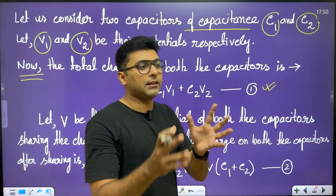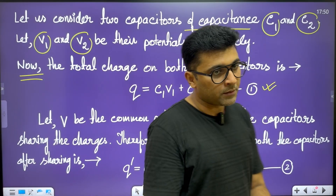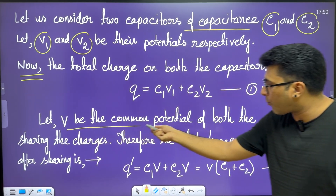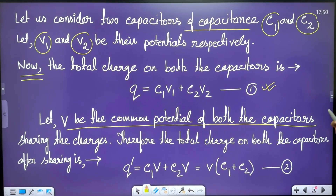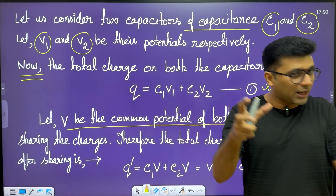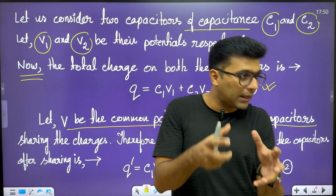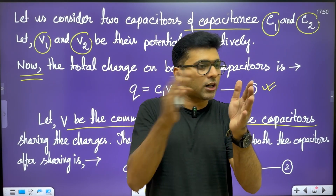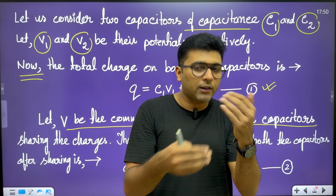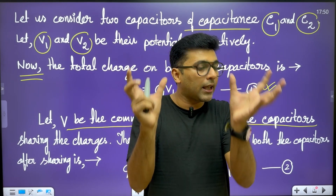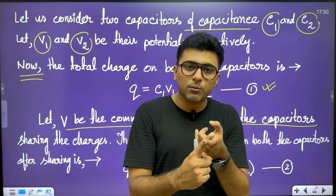After connecting the capacitors in parallel, VB is the common potential of both capacitors, sharing the charges. The charges are joined in parallel. While we do this, when the potential reaches the same value, we can see the common potential.